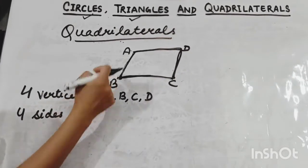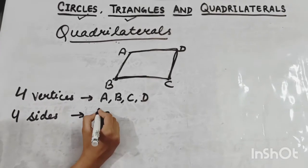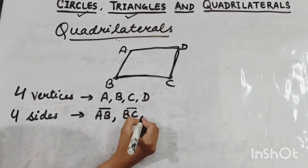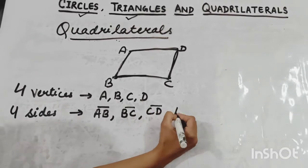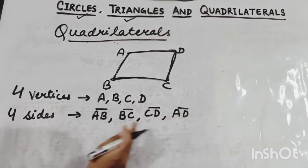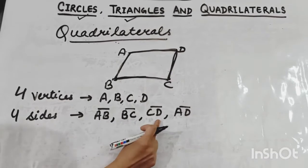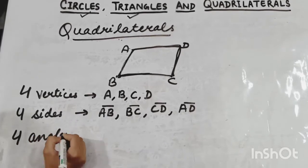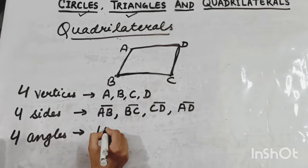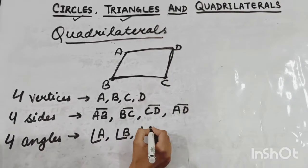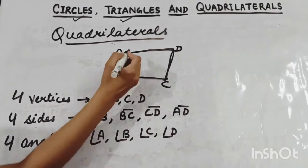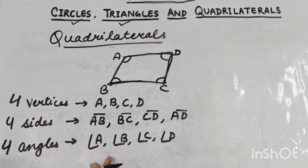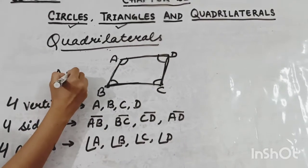The four sides: AB is a side (a line segment), BC is a line segment, CD is a line segment, and AD is also a line segment — so there are four sides in a quadrilateral. Next, we talk about the angles. There are also four angles: angle A, angle B, angle C, and angle D. So there are four angles in a quadrilateral, and we name it as quadrilateral ABCD.